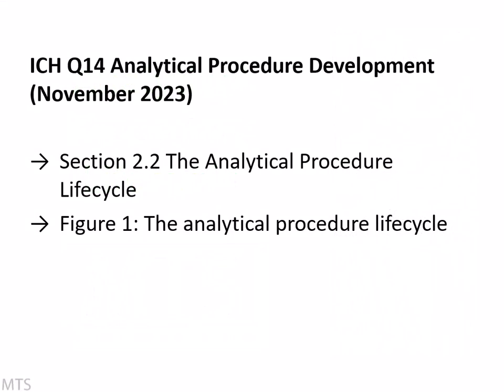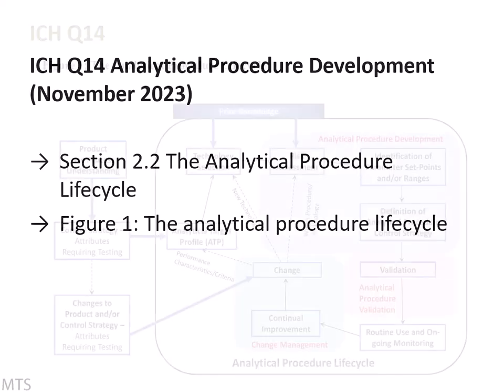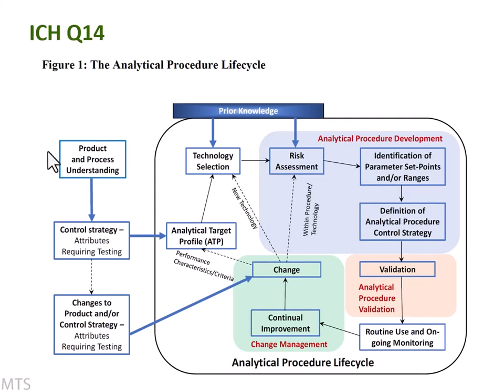In Section 2.2 of the ICH Guideline Q14 on Analytical Procedure Development, there is a figure which depicts elements of the analytical procedure life cycle. Methods start with you identifying that you need one — from your process and your product. You identify you need to know something about a final product, the drug substance, or the process. That will define the control strategy, which identifies a critical quality attribute requiring an analytical method.